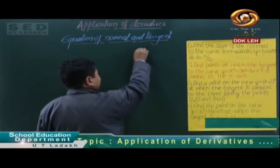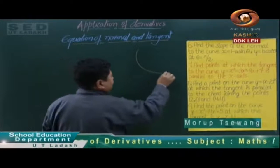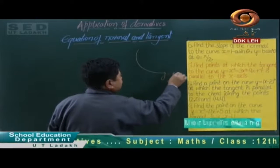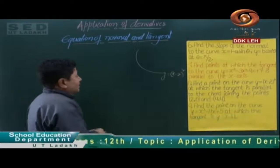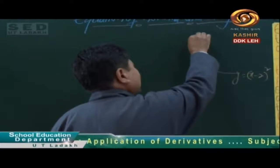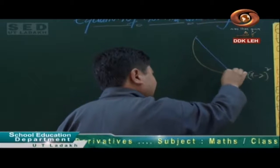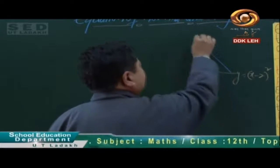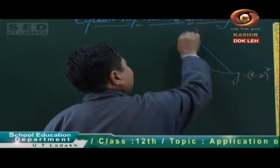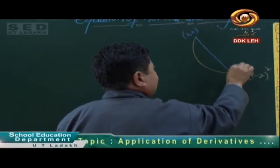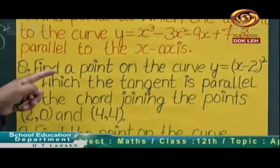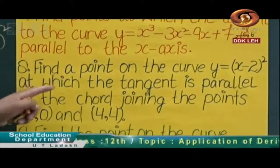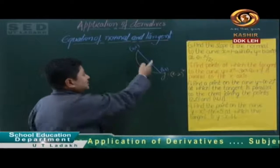This is the curve y is equal to (x minus 2) whole square. Now, we have to find a point on this curve at which the tangent is parallel to the chord. We need to find the point of contact with its x and y coordinates.